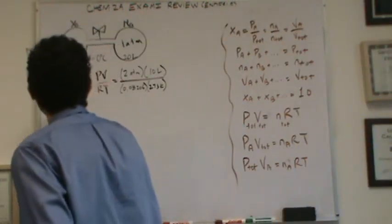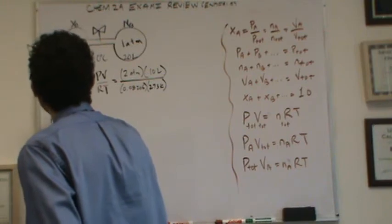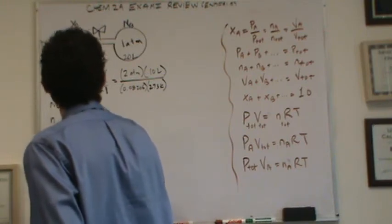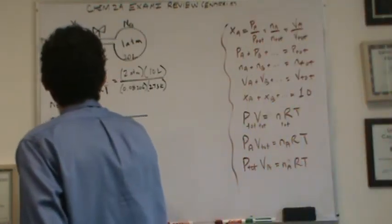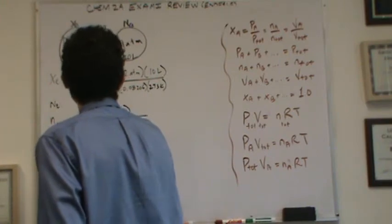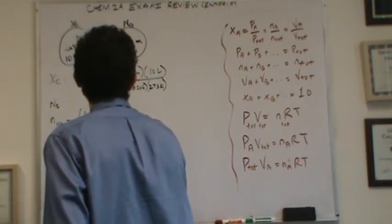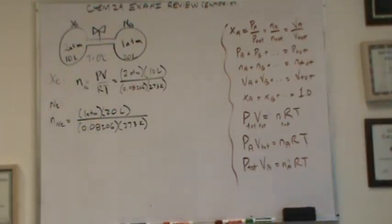Now let's do the moles of neon. Again, it will be PV over RT. We just have different numbers now. 1 atm, we have 20 liters, we have R is still 0.08206, and then we have 273. That'll get me the moles of neon.